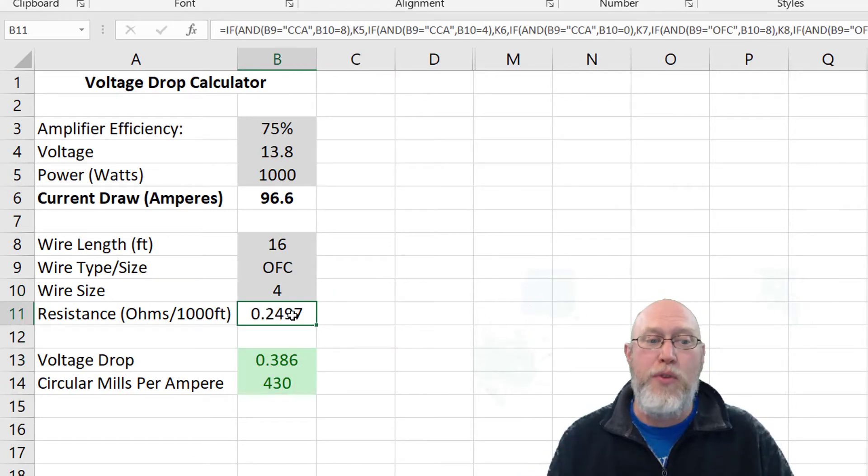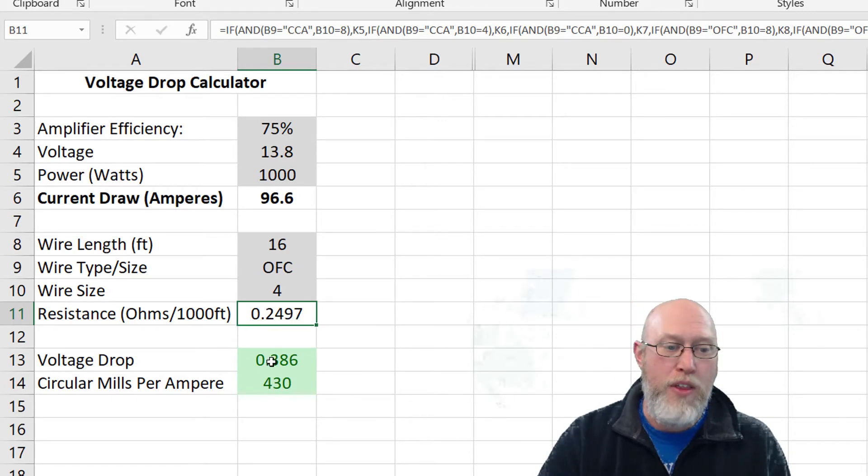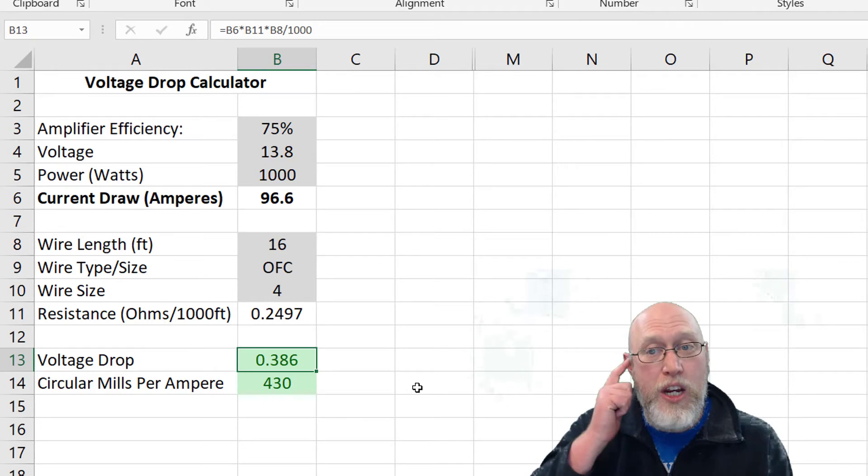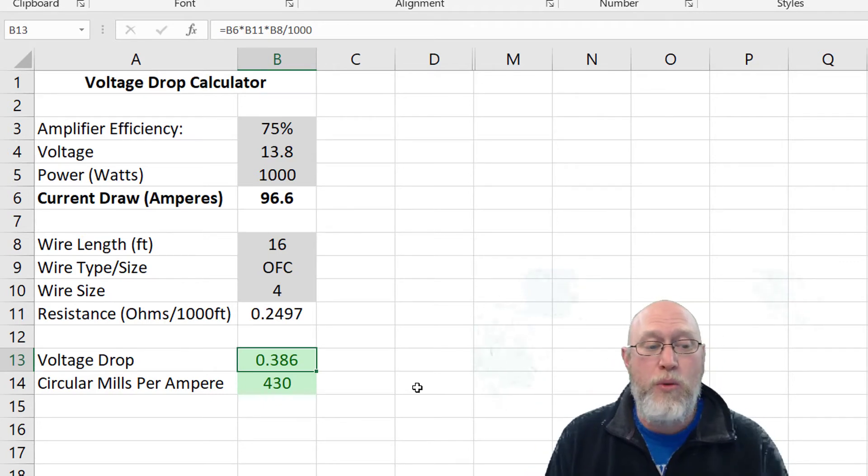Let's go with 4 gauge wire, and what we see is that this 4 gauge wire is going to have a resistance of 0.25 ohms per 1,000 feet. And as a result, I'm going to have 0.386 volts of voltage drop at the amplifier. The magic number is 0.5. We want to keep that below 0.5. If the voltage drop is more than half of a volt, then you're going to be able to hear the difference in your stereo. So we want to keep our voltage up. We're going to lose 0.386 volts. That's tolerable.